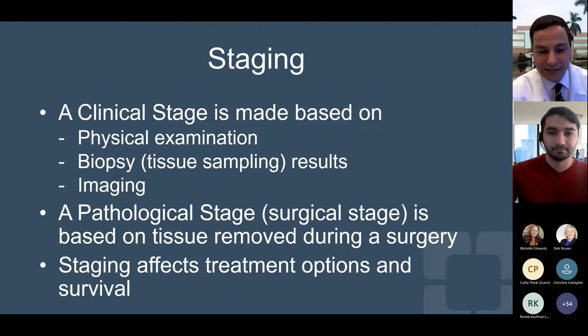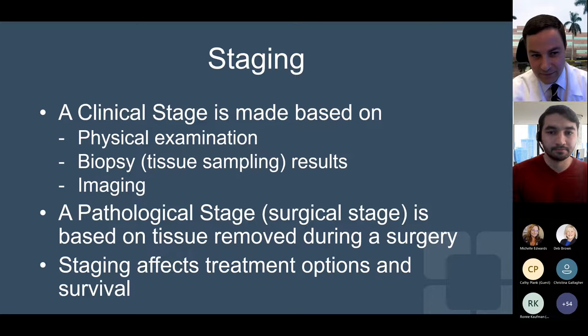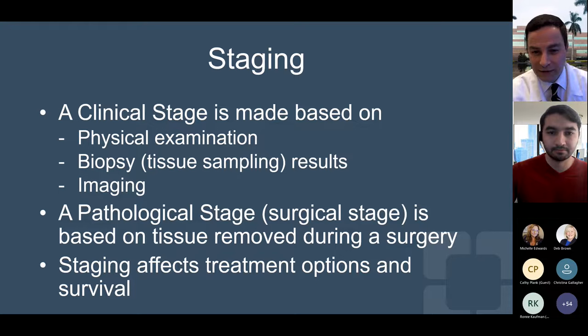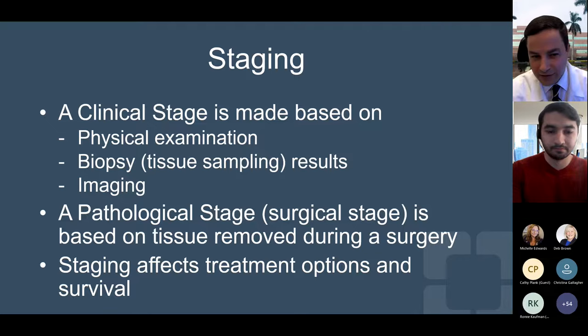Staging is a process by which we determine how much lung cancer there is in the body, where it has spread, and to what extent it has spread or metastasized. There's something called a clinical stage, which is based on a combination of physical examination, biopsy or tissue sampling results, and imaging, which I will discuss more at length in this talk. There's also a pathologic stage, also called a surgical stage, that is based on tissue removed during surgery. Staging is so important because it affects your treatment options and your survival.